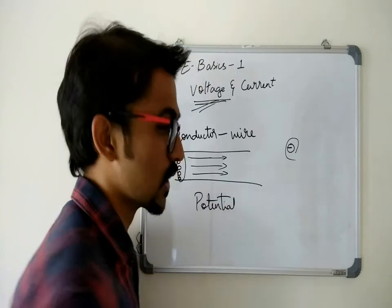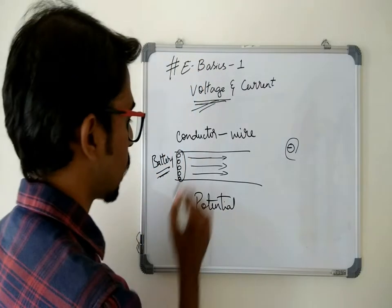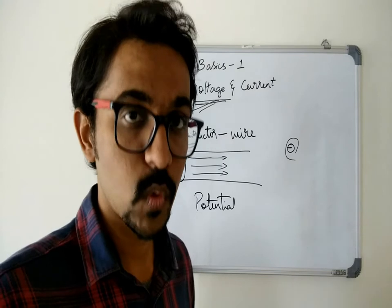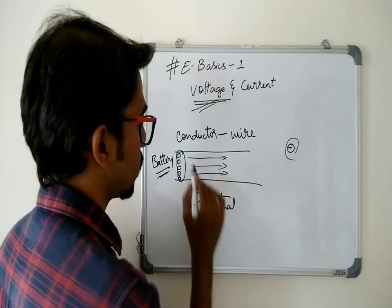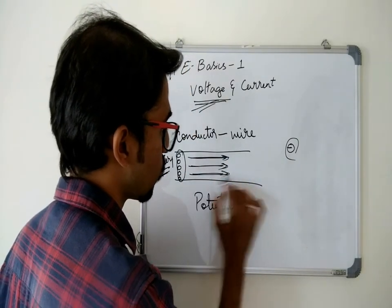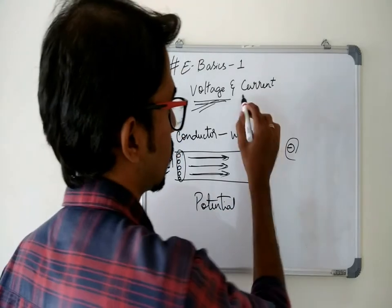This pushing of electrons, the amount of electrons pushed, is something we'll say as voltage or potential. So the amount of electrons pushed through a conductor is voltage and the rate at which they move inside the conductor is current.